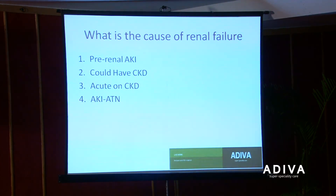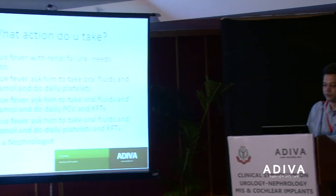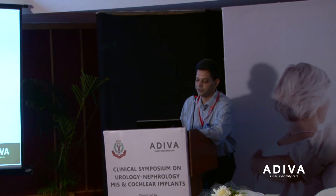Pre-renal — correct. The key concept here is that the patient is vomiting and cannot take fluids orally. So without incorporating the clinical history while interpreting the test, it's of no use. In this patient, the indication for admission was that he would not be able to take orally, and therefore you need to correct the pre-renal azotemia before it progresses into ATN.